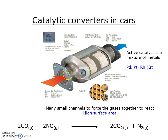Inside the catalytic converter, there are many small channels. We're talking there are thousands of these small channels, probably about half a centimetre in height and width. The catalyst is coated on the inside of these tiny channels, so this gives us a high surface area for the reaction to occur, because the gas molecules are forced down these small channels.